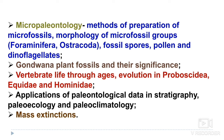Vertebrate life through the ages, evolution of proboscideans, equids, and hominids are included. Application of paleontological data in stratigraphy, paleoecology, and paleoclimatology is an important topic that has been included in the syllabus. Mass extinction events are also important — you can get a question on mass extinction, particularly at the Cretaceous-Tertiary boundary, which has been discussed already.